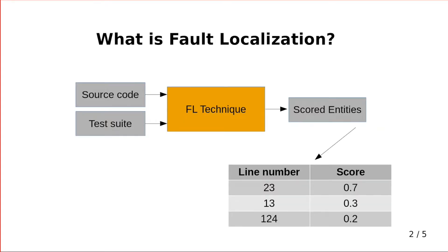For example, it says that line 23 is the most suspicious element in your code to have the bug. Or if you cannot find a bug at line 23, it's probably at line 13. So this is fault localization — it helps you find the location of the bug inside your source code that you want to change in order to fix the bug.